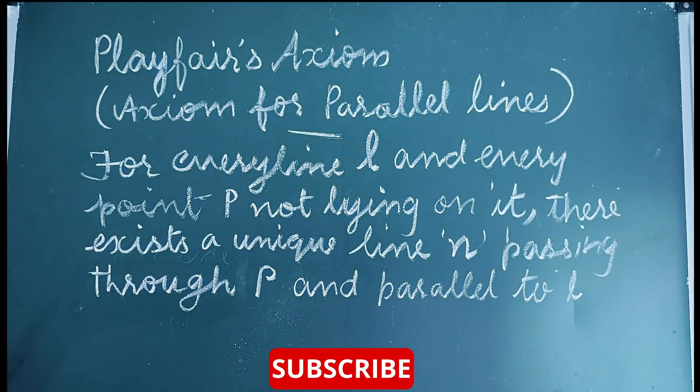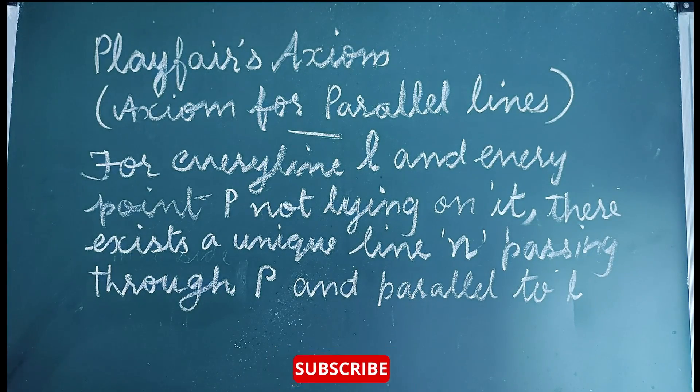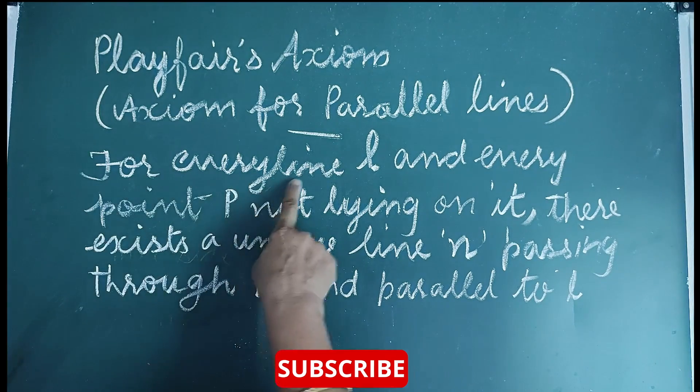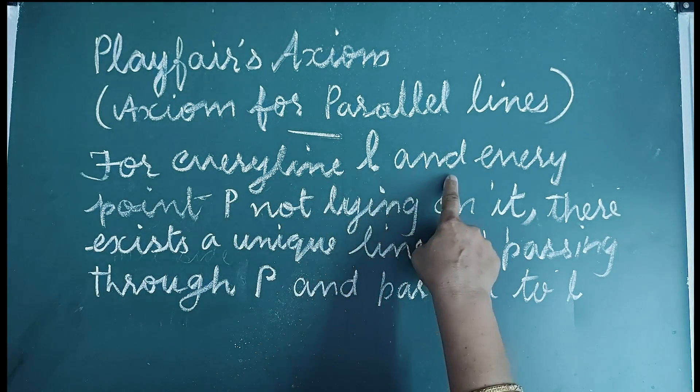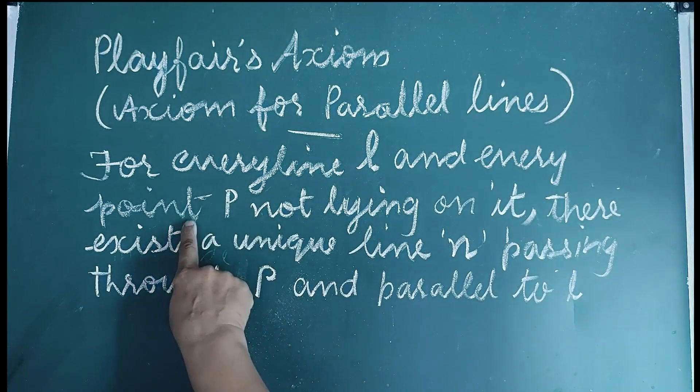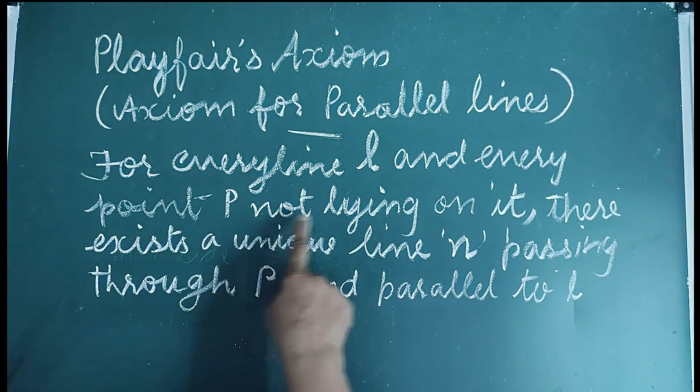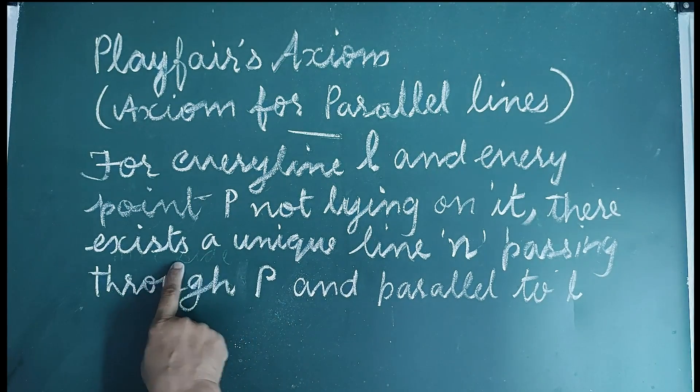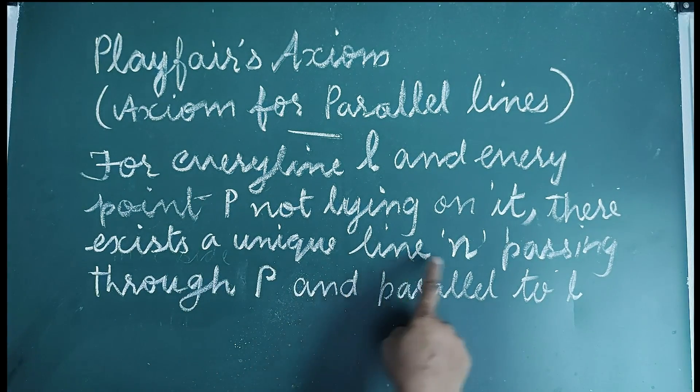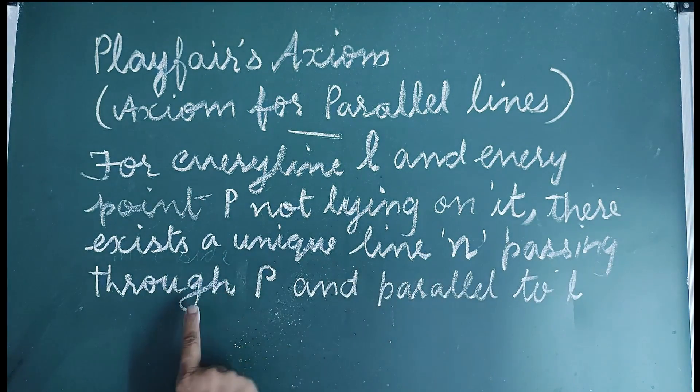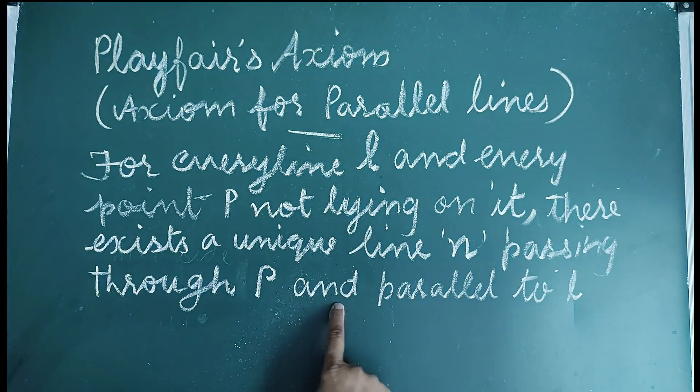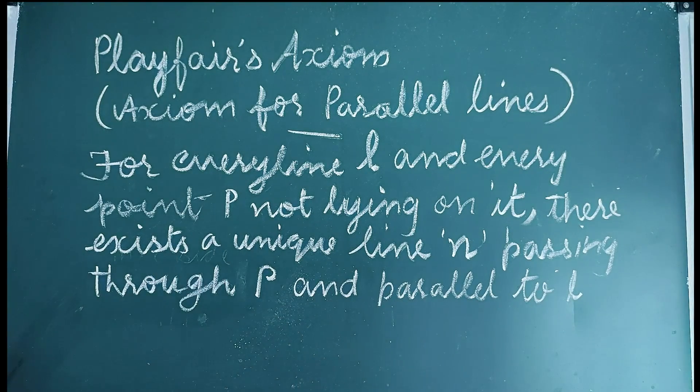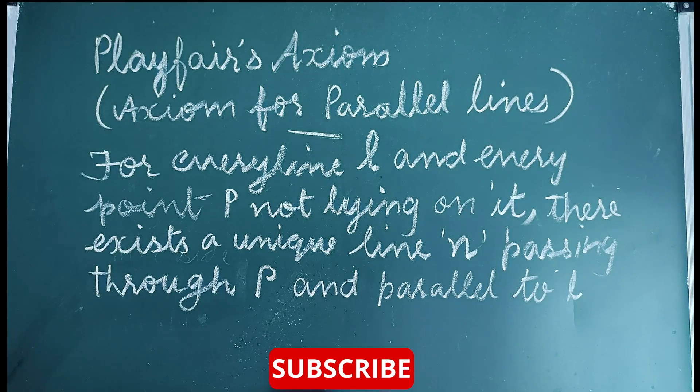Playfair's Axiom for Parallel Lines. For every line L and every point P not lying on it, there exists a unique line N passing through P and parallel to L. This is known as Playfair's Axiom.